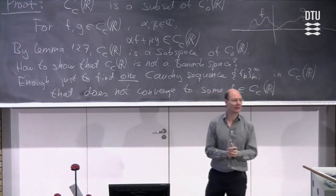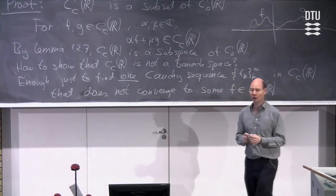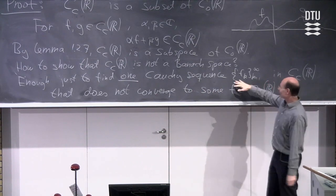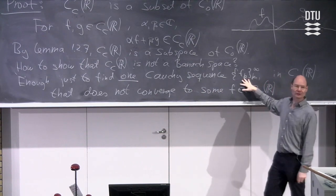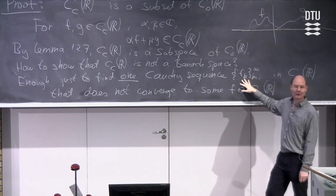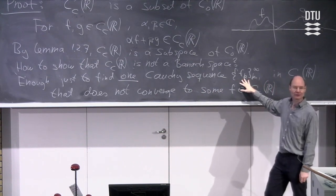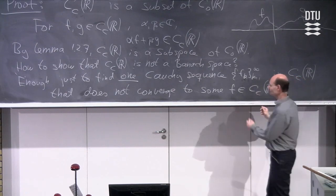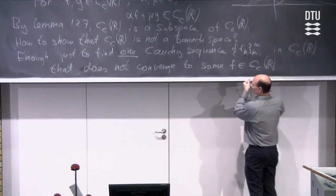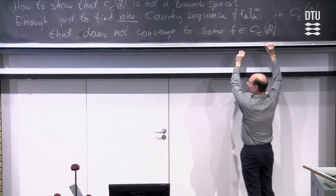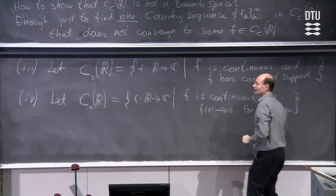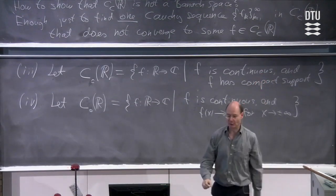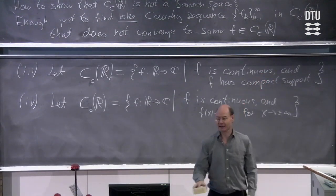So we just look for one Cauchy sequence fk, k equals 1 to infinity, in Cc(ℝ), chosen such that it does not converge to an element in Cc(ℝ). If you want to show something is a Banach space, you need to handle every single Cauchy sequence. But to show it is not, one counterexample suffices.